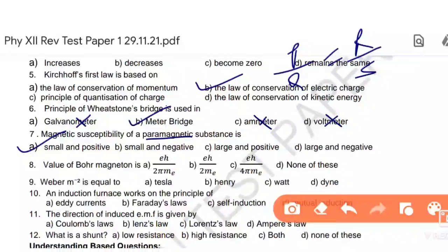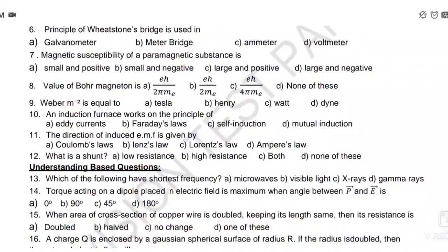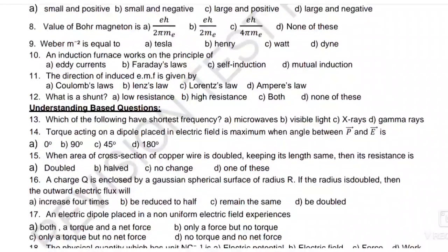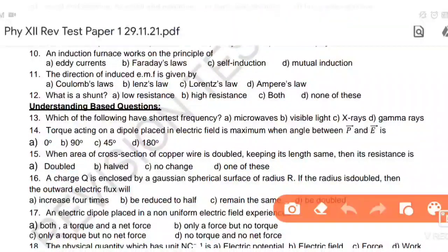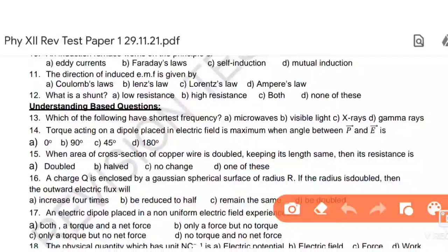Next, value of Bohr magnetron. Bohr magnetron value is e h divided by 4 pi m. Weber per meter square is equal to Tesla. Next, an induction furnace works on the principle of eddy current. Next, the direction of induced EMF is given by Lenz law.